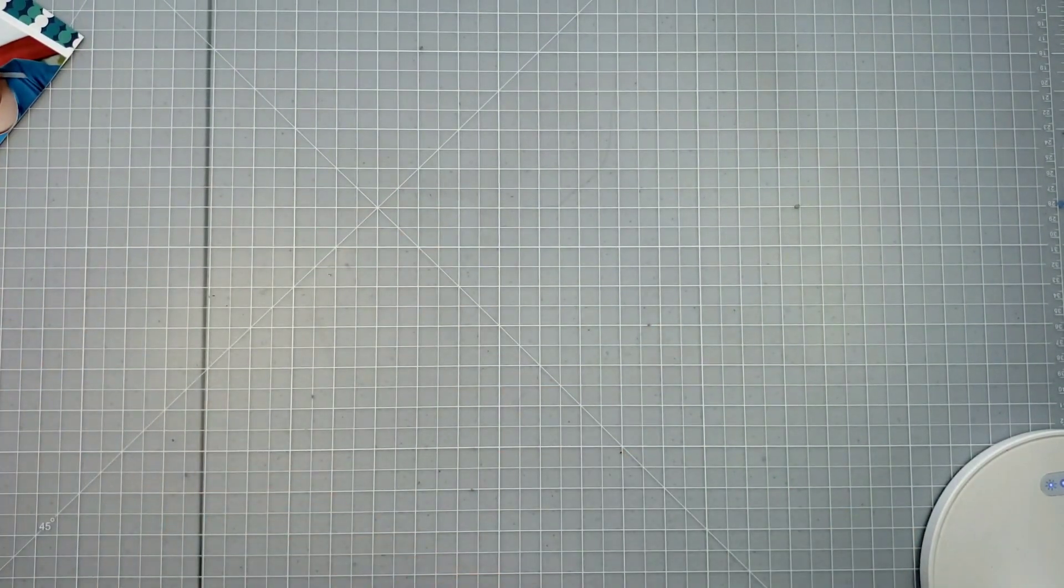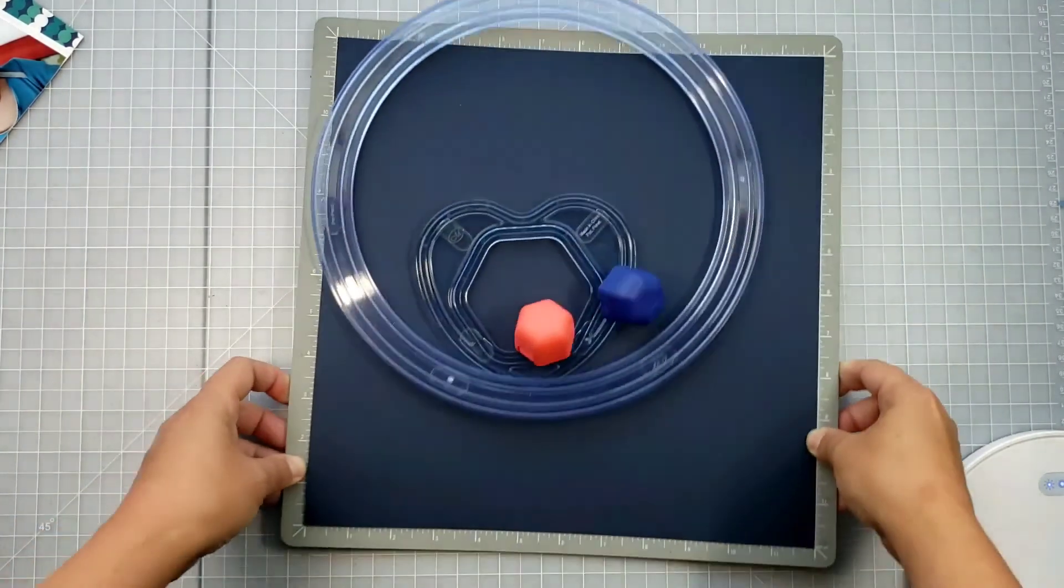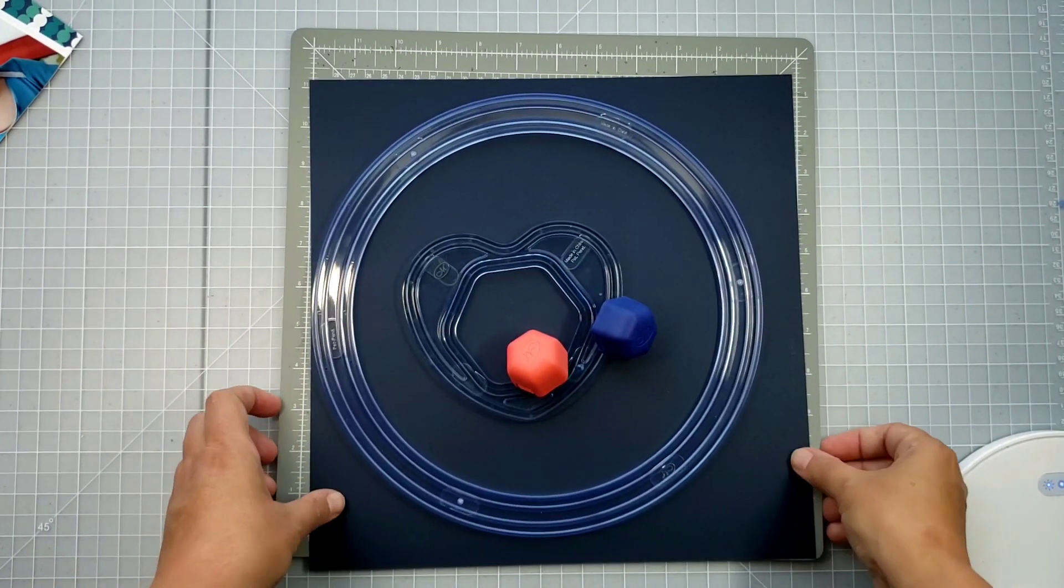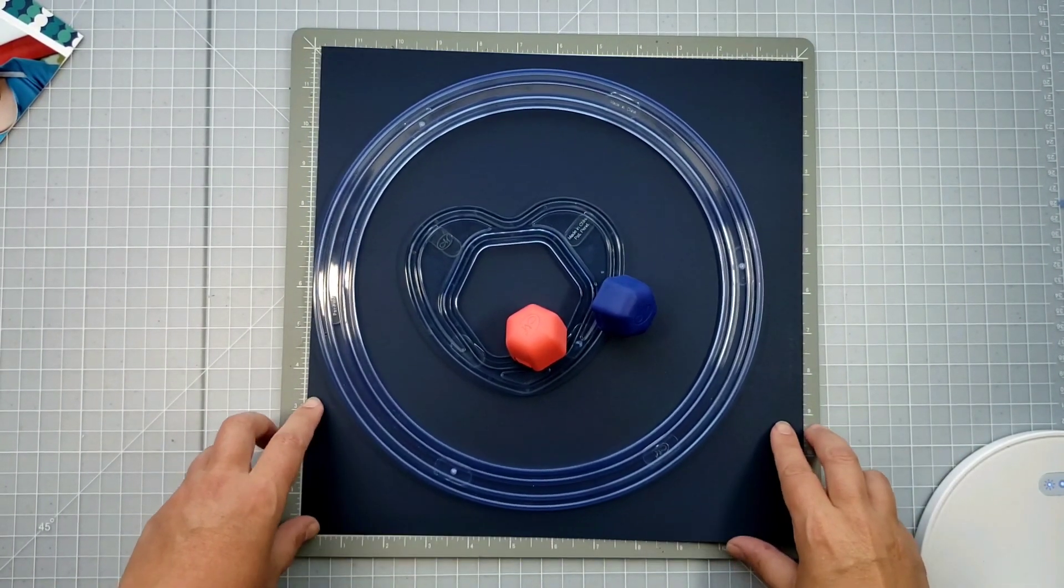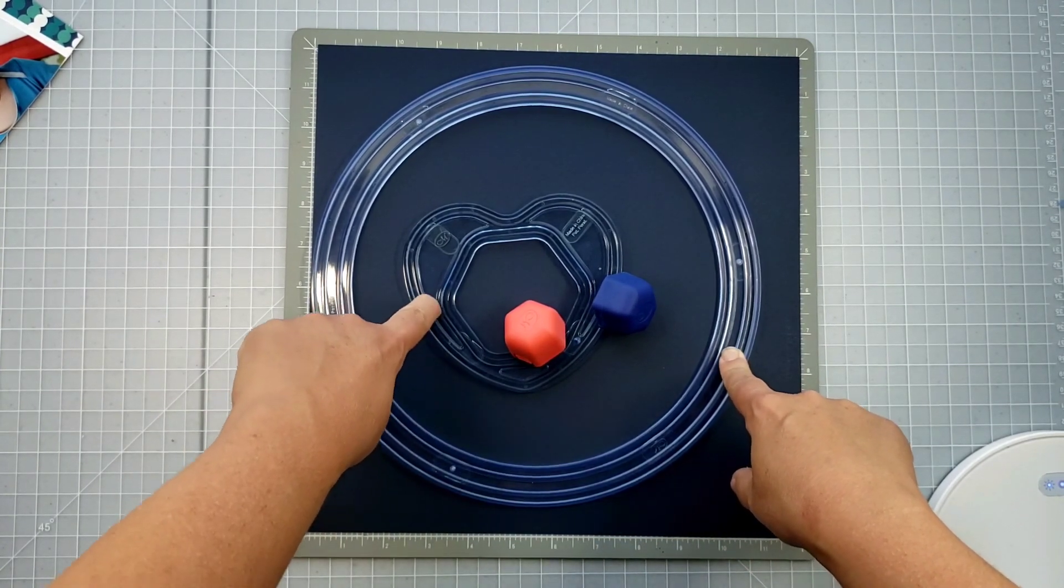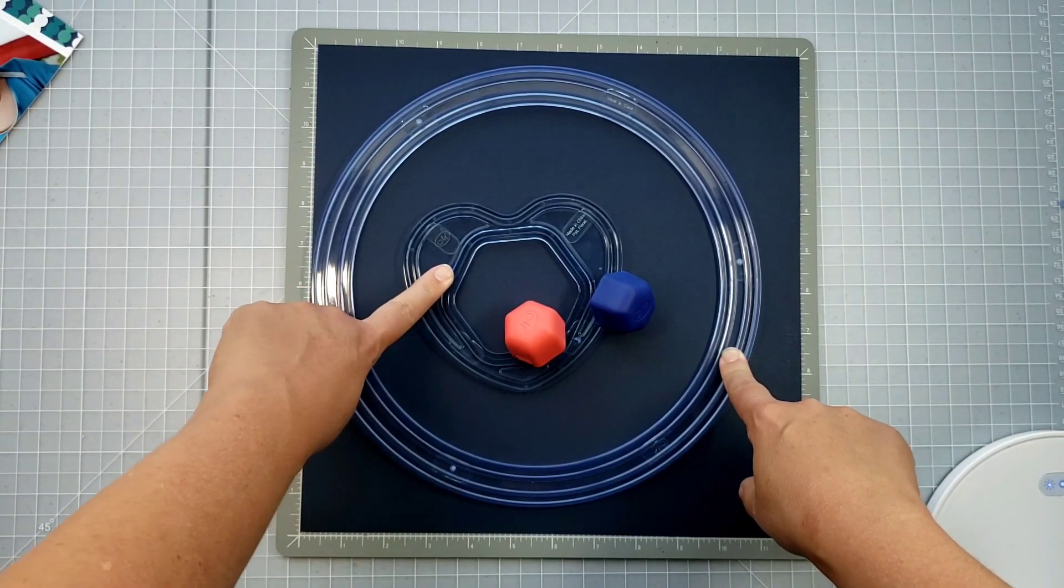This shutter icon uses the recently re-released Jumbo Circle, which I'm super excited is back into Creative Memories regular lineup. So we're going to use the Jumbo Circle. We're also going to use the Heart with Hexagon template from the Gemstone Collection.